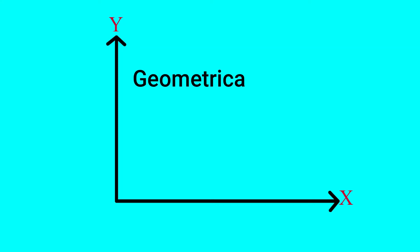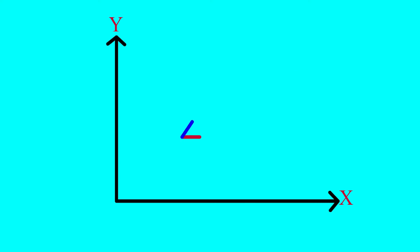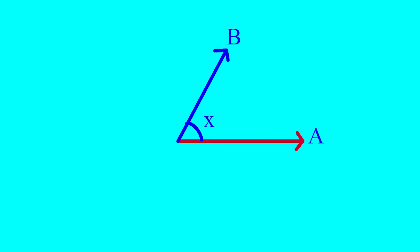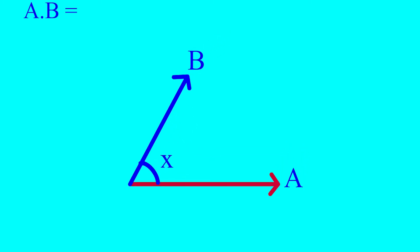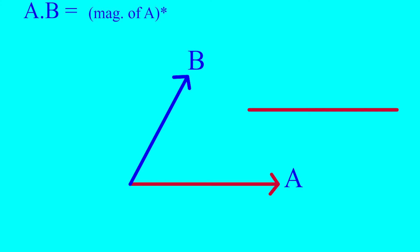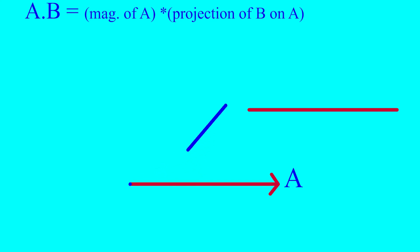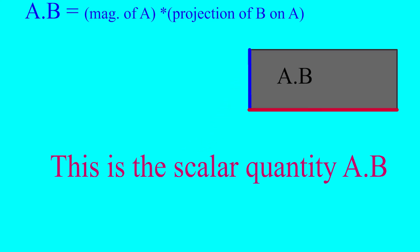In this video, we will understand the geometrical interpretation of dot product. Let's have two vectors a and b at some angle X. The dot product of a and b is equal to the magnitude of vector a multiplied by the projection of vector b on vector a. The multiplication of these two magnitudes is the scalar quantity we get after the dot product.